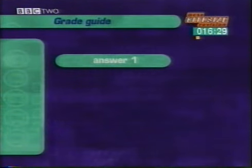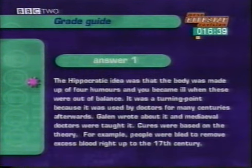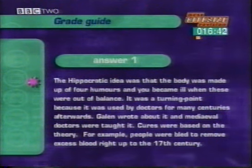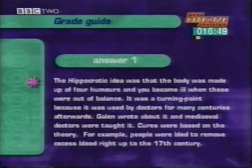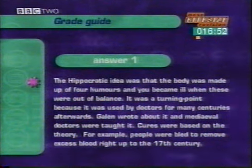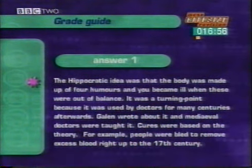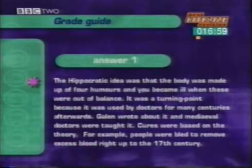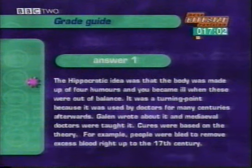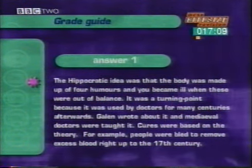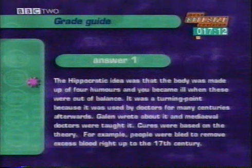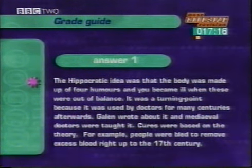Let's look at two summary answers. The first could expect average marks, the second higher ones. First answer: 'The Hippocratic idea was that the body was made up of four humours and you became ill when these were out of balance. It was a turning point because it was used by doctors for many centuries afterwards. Galen wrote about it and medieval doctors were taught it. Cures were based on the theory — for example, people were bled to remove excess blood right up to the 17th century.' This student explained the theory and described how it was part of medical practice for 2,000 years. However, it doesn't describe how the Hippocratic doctors broke with what people believed before. This student would probably be heading for a C grade.